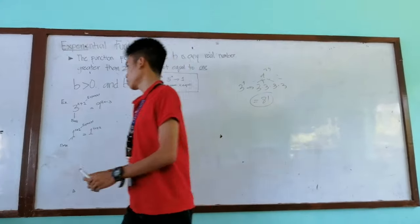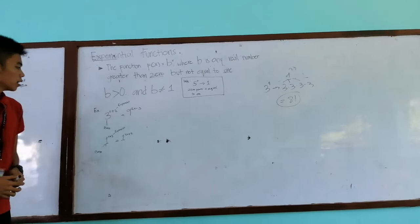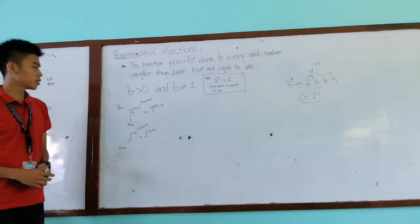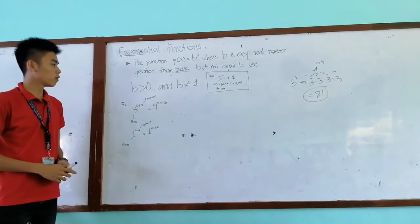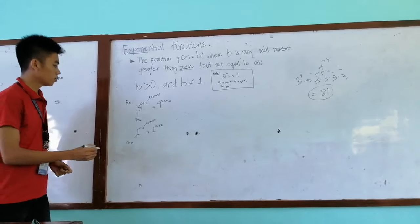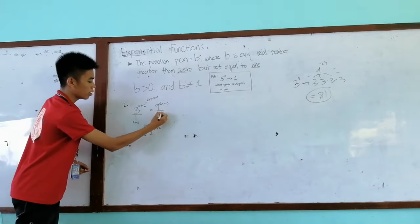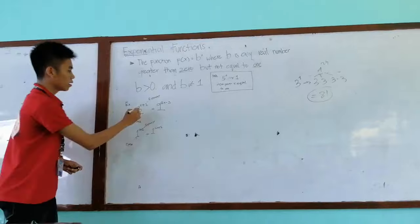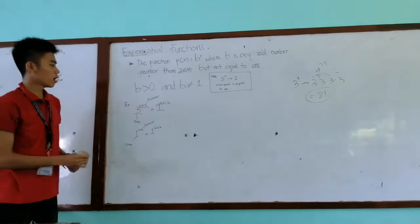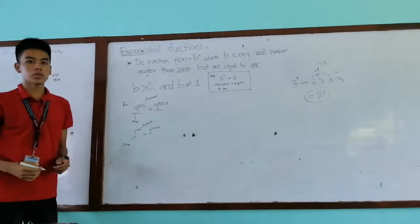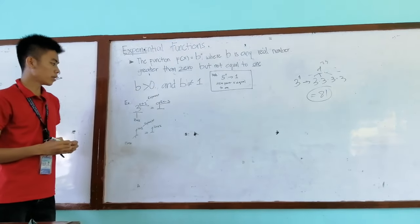So let's have our example. 3 raised to the power of x plus 2 equals 9 raised to the power of 2x minus 3. So the 3 in here, the 9 in here, is our base. And this x plus 2 and 2x minus 3 is what we call the exponent.